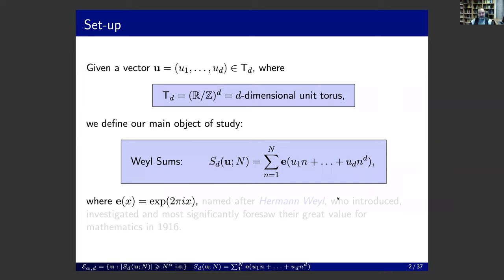Let me start with basic definitions. Assume that we are given a vector of real numbers which belongs to the unit cube of dimension d. It's more convenient to think about this cube as a torus, reducing everything modulo 1. So T^d is this d-dimensional unit torus.